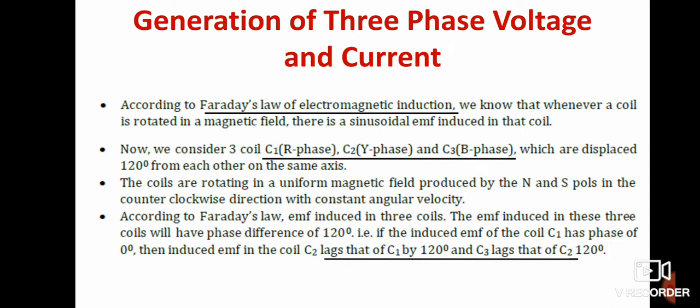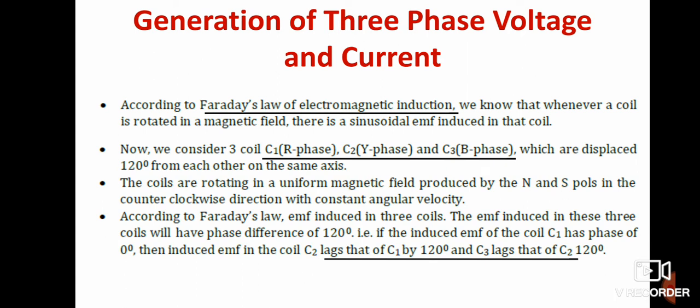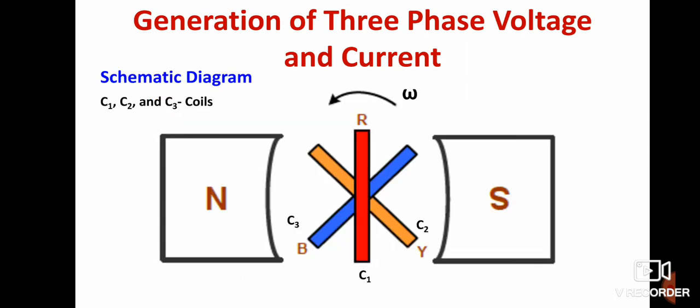All three coils are 120 degrees apart. This is the working of this particular system. You can note down these points in your notebook and explain orally how to produce three-phase voltage and current.